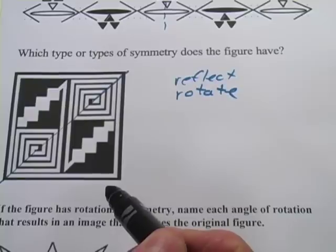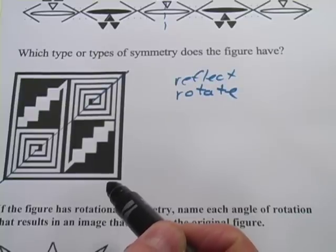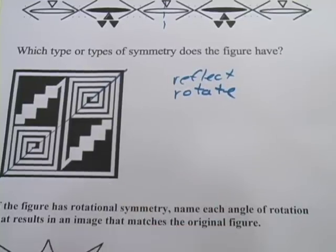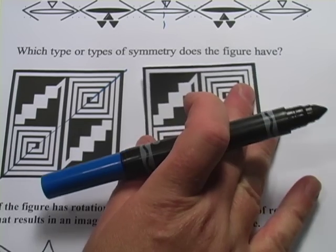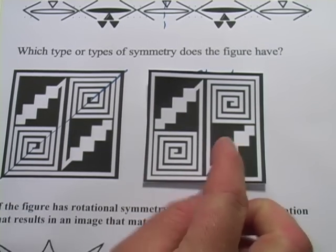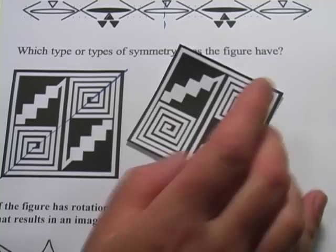How about rotation? And this can be hard to imagine in your mind's eye, although the more you practice it the better you'll get at it. But let's just try here with this one. I printed out another copy here and cut it out. So when we rotate something, we're spinning it. So let me just spin it 90 degrees and see what we get.